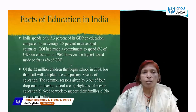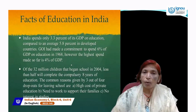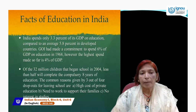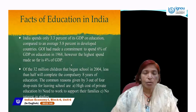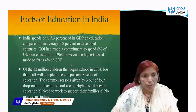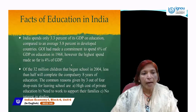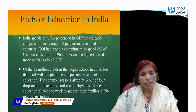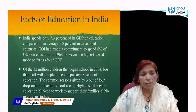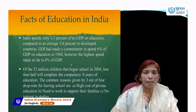Facts of education in India: India spends only 3.3% of its GDP on education, which is very low compared to an average of 5.8% in developed countries. The Government of India had made a commitment to spend 6% of GDP on education in 1968. However, the highest amount spent so far is only 4% of GDP.